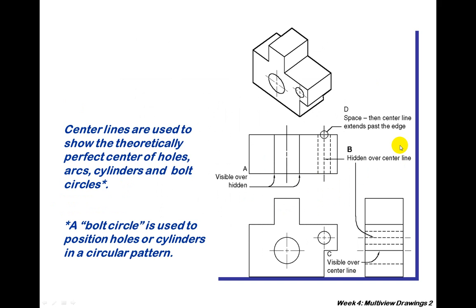Center lines are used to show the theoretical perfect center of holes, arcs, cylinders, and bolt circles. A bolt circle is used to position holes or cylinders in a circular pattern. Notice whenever we have a hidden line here. Space then, space. And then a center line extends past the edge. So we have a center line here with object lines.